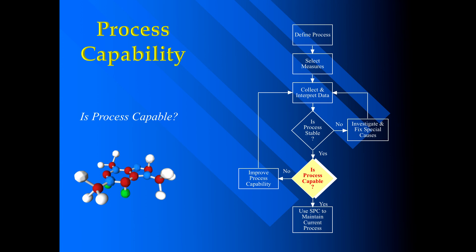If process capability is satisfactory, then it is okay and you can use statistical process control to maintain the current process. If process capability is not up to the mark, then we have to improve the process capability first, then collect the data again, check the process stability, and check the process capability.